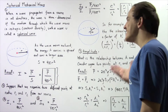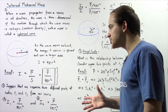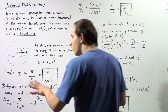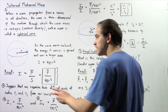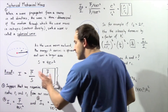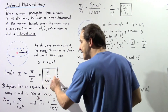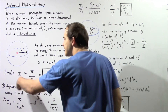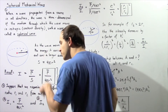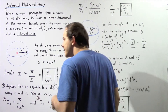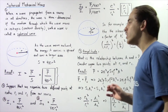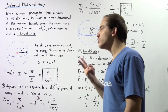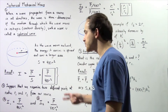What is the relationship between radius and intensity? The relationship is given by the formula: as the radius increases, the intensity decreases.